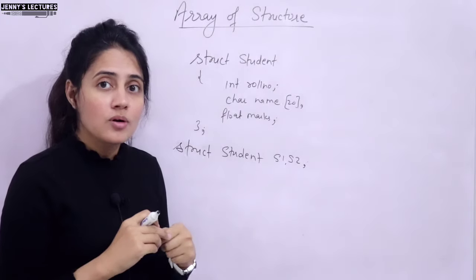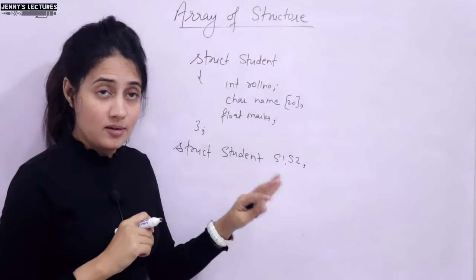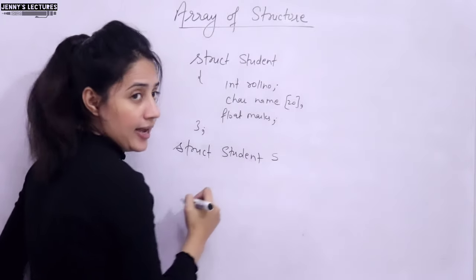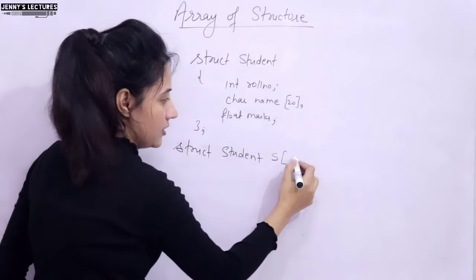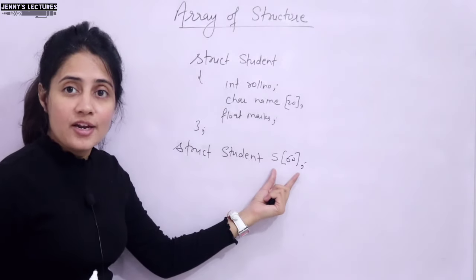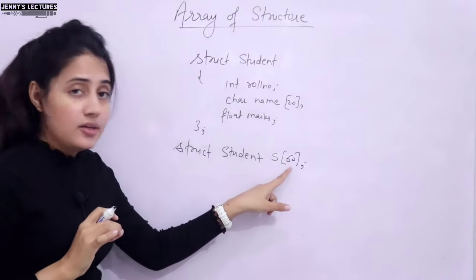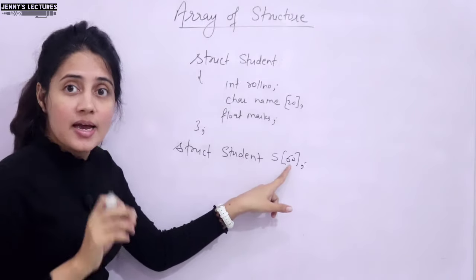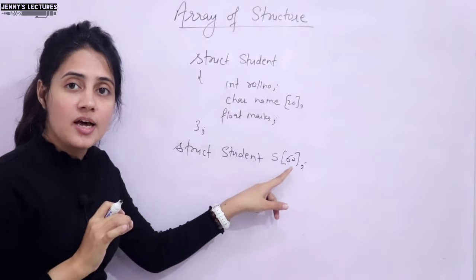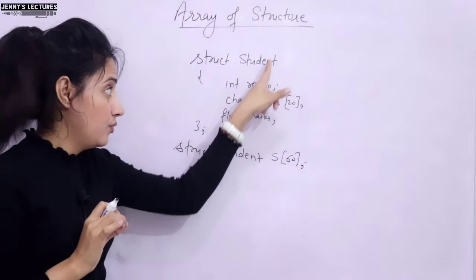So what we can do is take an array of these variables — that is exactly known as array of structure. Simply write 's[60]', which gives us an array of 60 variables. Each array element represents a structure object, so we have 60 structure objects or 60 variables of this structure.